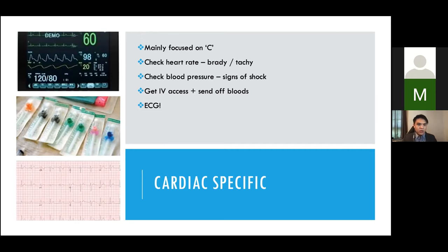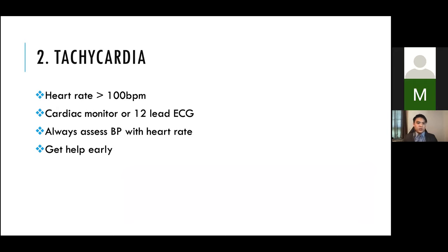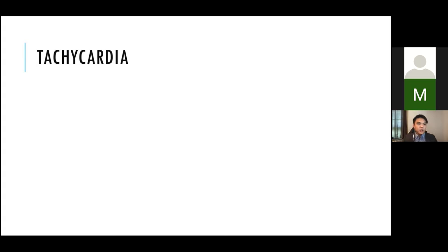Tachycardia is defined as a heart rate of more than 100 beats per minute. Normal heart rate ranges between 60 to 100, and anything above 100 is considered tachycardia. Any patient with a heart rate over 100 should be put onto a cardiac monitor or at least get a 12-lead ECG. Assessing blood pressure tells you how compromised the patient is and gives you the chance to decide how fast you need to react.